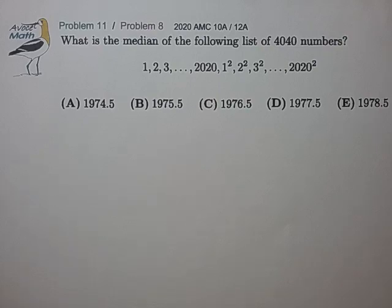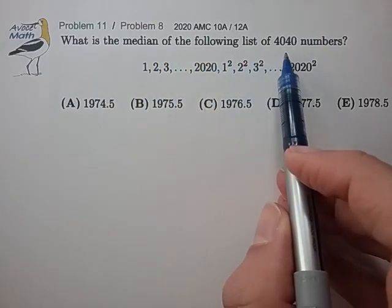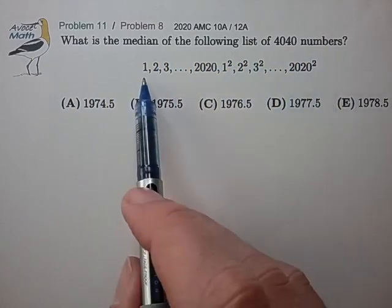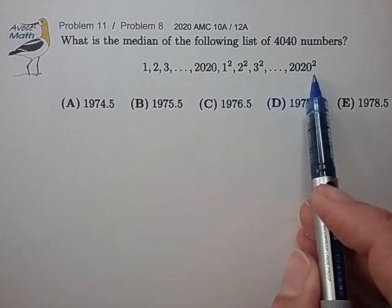Hi, this is problem 11 from the 2020 AMC 10A. What is the median of the following list of 4040 numbers? We have 1 through 2020 and 1 squared through 2020 squared.